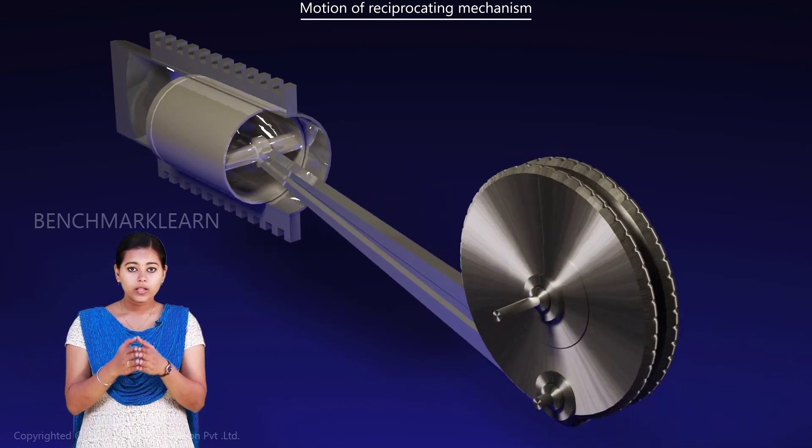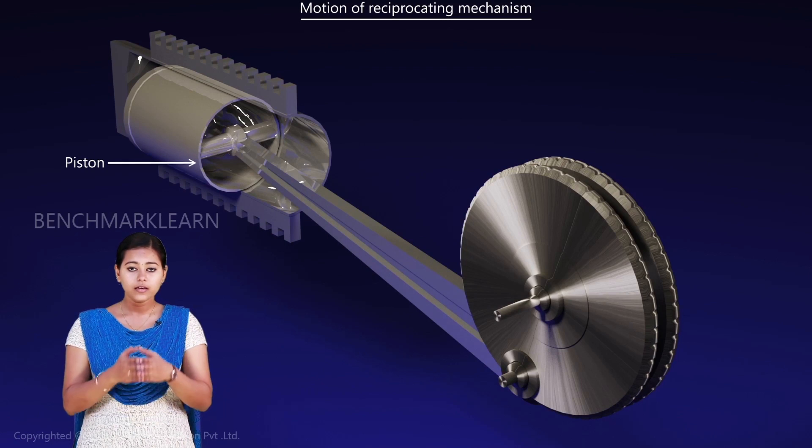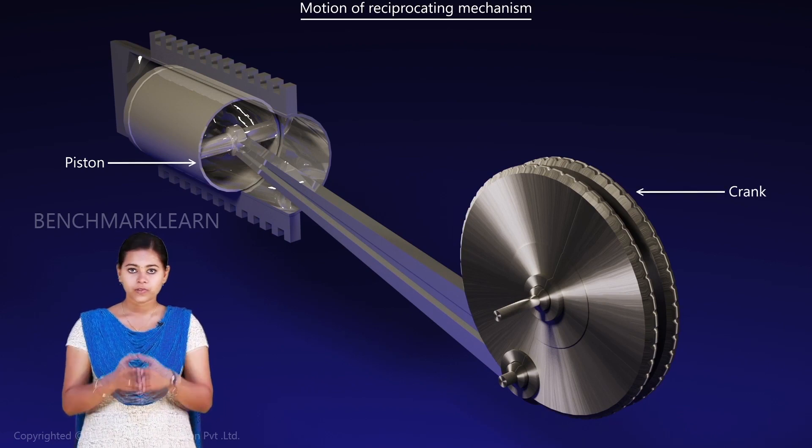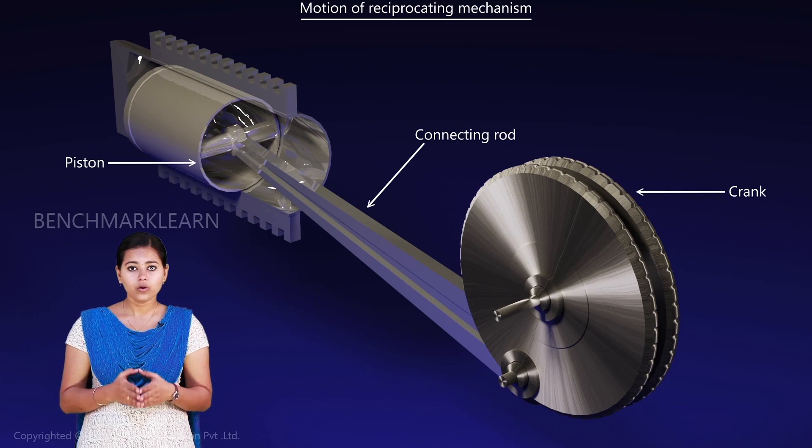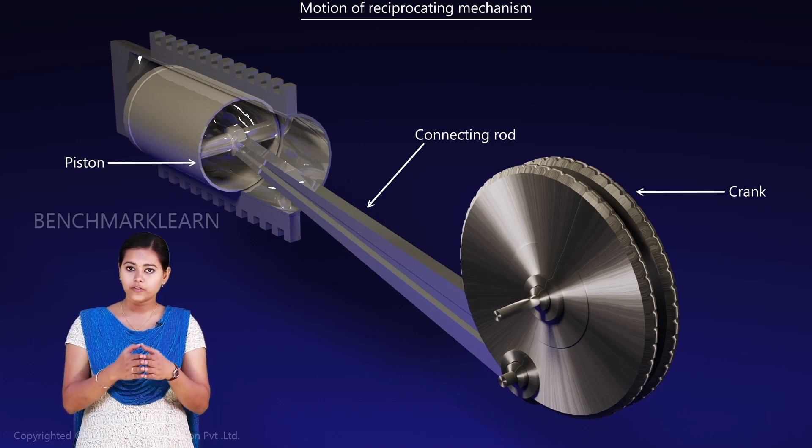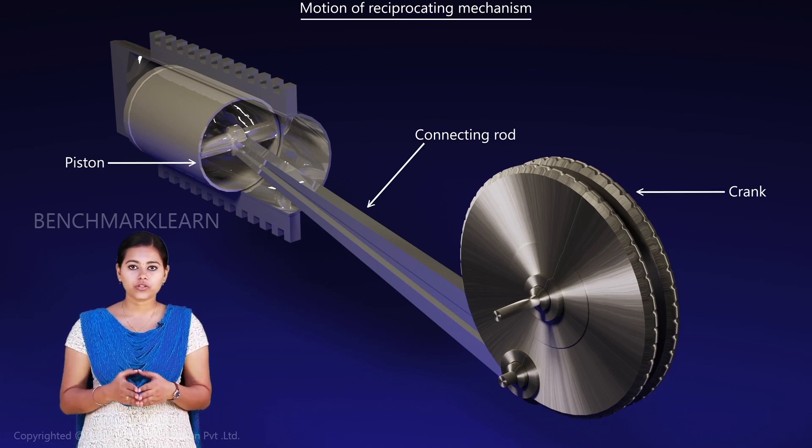As you can see, when the piston moves inside the cylinder, the crank will undergo rotational motion. Here, the connecting rod converts the linear motion of the piston to the rotational motion of the crank.